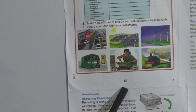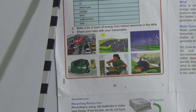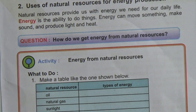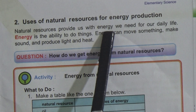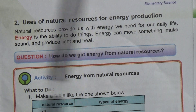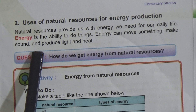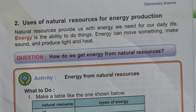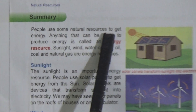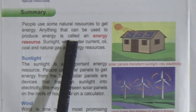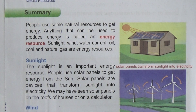Students, look at here — this is page number 51. Here is 'Uses of Natural Resources for Energy Production.' Natural resources provide us with energy we need for our daily life. Energy is the ability to do things; energy can move something, make sound, and produce light and heat. People use some natural resources to get energy. Anything that can be used to produce energy is called an energy resource.